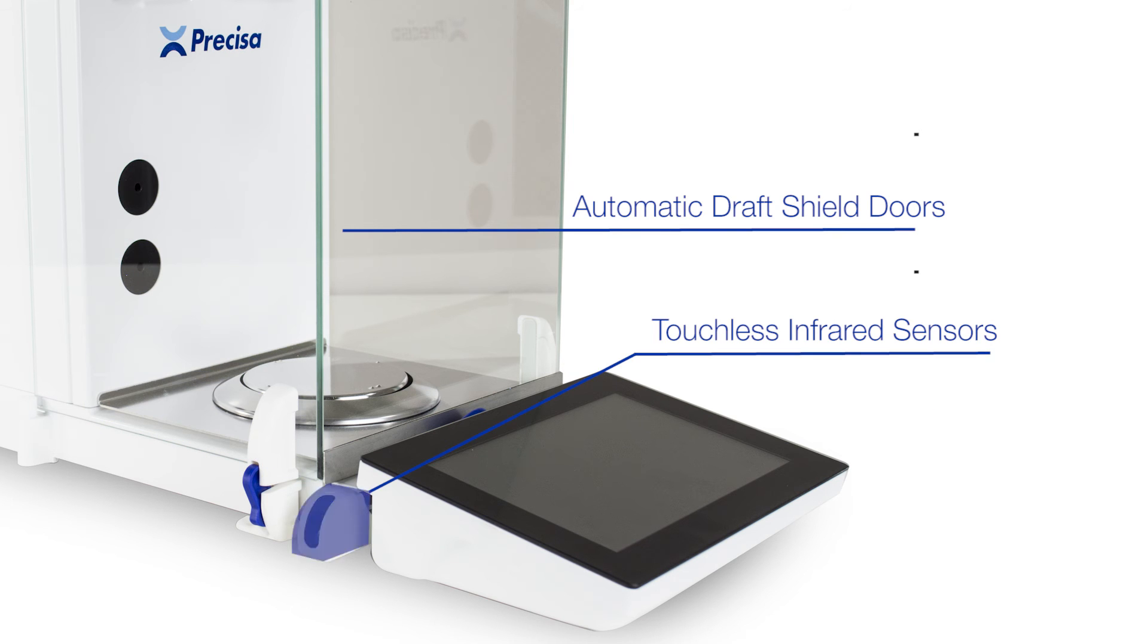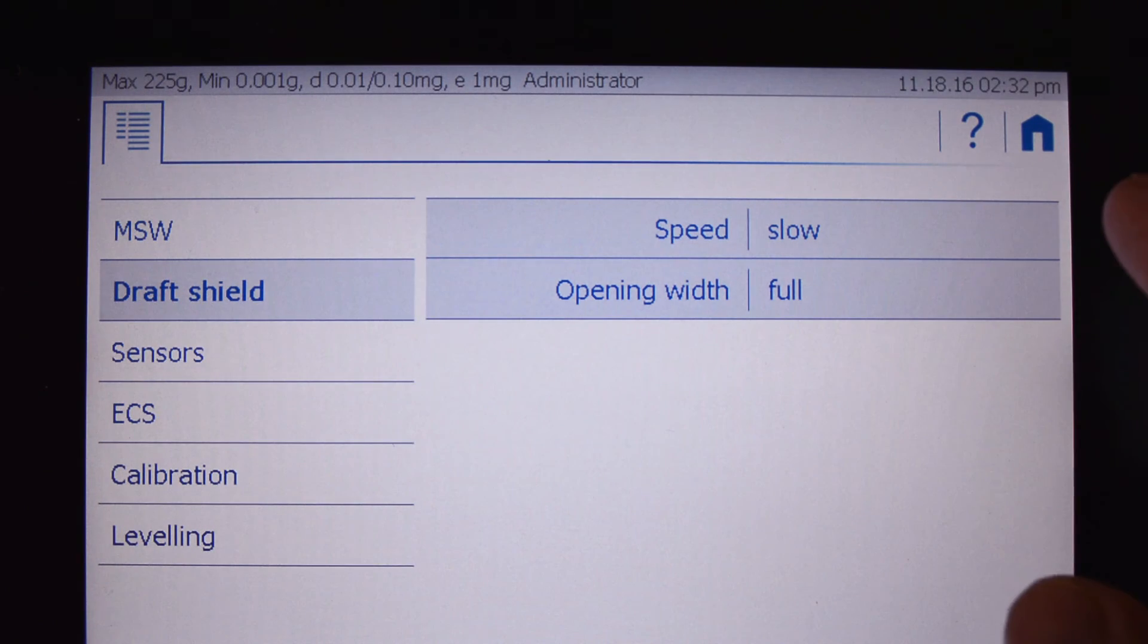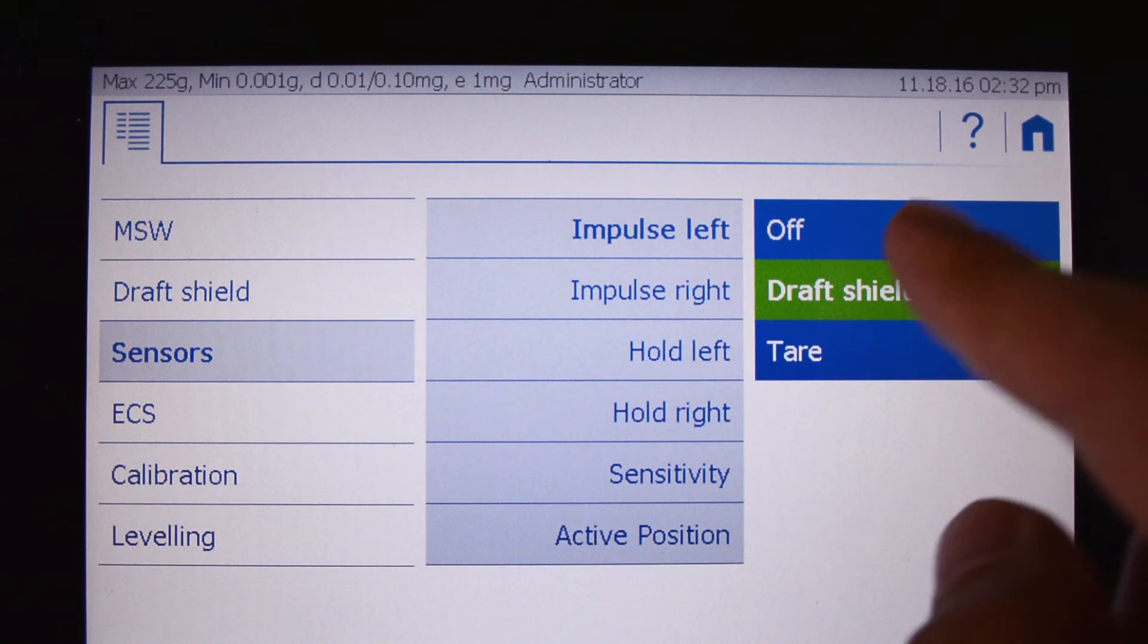It is equipped with automatic draft shield doors that are controlled by touchless infrared sensors on the sides. The sensitivity of the sensors can be changed to the settings on the tablet, and the function of each individual sensor can also be changed to tare or zero with a wave or a hold of the hand.